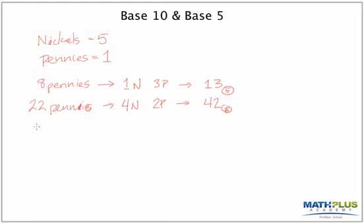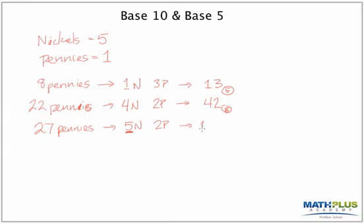Let's go to a bigger number, like twenty-seven pennies. If I were just trading for nickels and pennies, I would get five nickels and two pennies. But remember: in base five, there's no digit five — it doesn't exist. So I need to trade out again. What are five nickels equal to? Five nickels equal one quarter and zero nickels, plus two pennies.